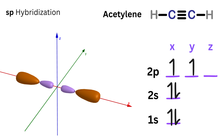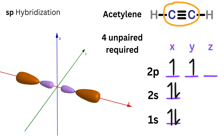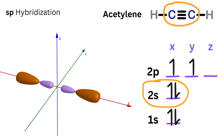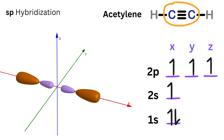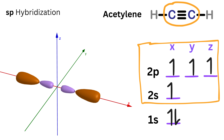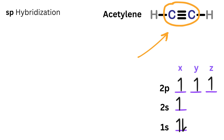For example, if the atom mixes its s and px orbitals, you get two sp hybrids along the x-axis: one in the positive x direction and one in the negative x direction. That's what happens in molecules like acetylene, the gas used in welding torches. For carbon to form the triple bond seen in acetylene, it needs to get four unpaired electrons ready for bonding. First, one of the paired electrons from the 2s orbital jumps up to the empty 2pz subshell, creating the excited state: 1s², 2s¹, 2p³. Now the atom has four unpaired electrons.